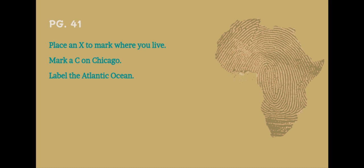On page 41 where the map is located, I want you to place an X to mark where you live. Place a C where Chicago is. And label the Atlantic Ocean. We will revisit the map when we read the text.